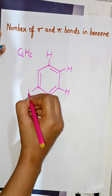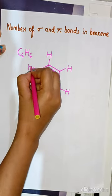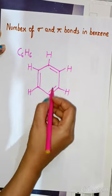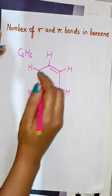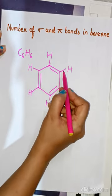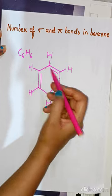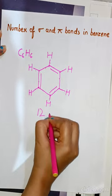The number of sigma bonds are equal to the number of single bonds, and the number of pi bonds are equal to the number of double bonds. So how many single bonds are present? One, two, three, four, five, six, seven, eight, nine, ten, eleven, twelve. So twelve sigma bonds.